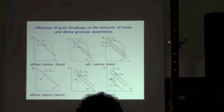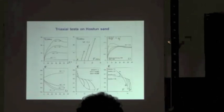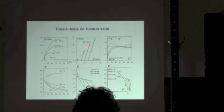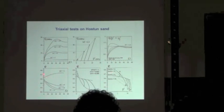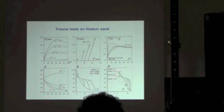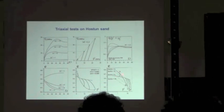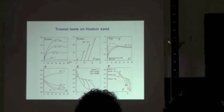This is the main result concerning the influence of grain breakage. Here you have some results also by LeLong on Hostun sand performed at quite high confining pressure, up to 14 MPa. You can see that the material, originally dilatant, becomes more and more contractant when you increase the confining pressure. This is due to the grain breakage, which leads to the shift of the critical state line and the increase in contractancy.